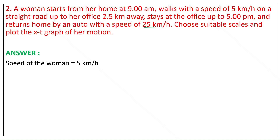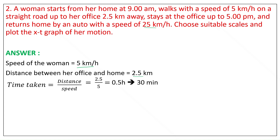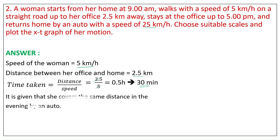Woman starts from home at 9 a.m., walks with a speed of 5 km per hour. The distance between her office and home is equal to 2.5 km. Therefore, time taken is equal to distance by speed, that is 2.5 by 5, which gives 0.5 hours, that is 30 minutes. Therefore, the woman reaches her office in 30 minutes, that is at 9:30 a.m.